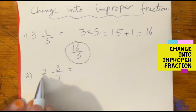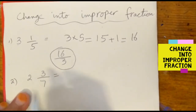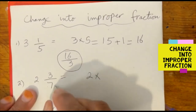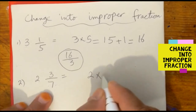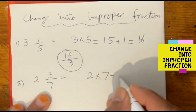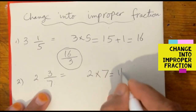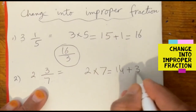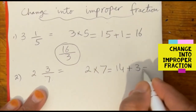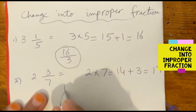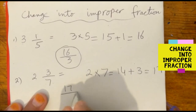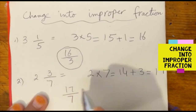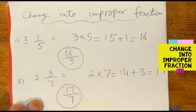2 whole 3 over 7. 2 times by denominator 7, answer is 14. Add numerator 3, answer is 17. Answer will be 17 over 7. Denominator is 7. Complete.